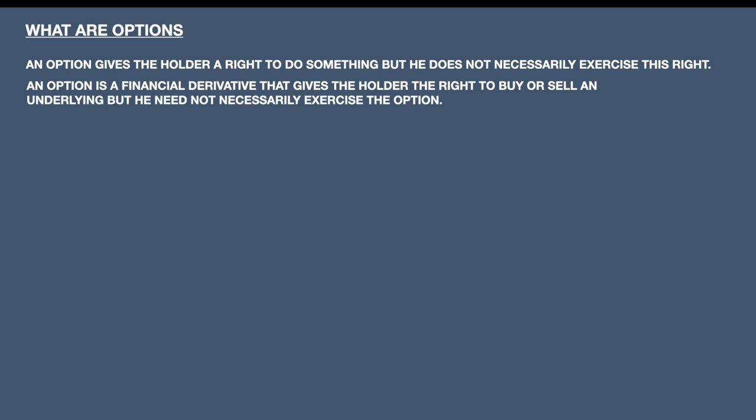An option, which is basically a financial derivative, gives the holder the right to buy or sell an underlying, but he need not necessarily exercise this option. He may have the right to buy or right to sell, but he may not buy or he may not sell. That is the meaning of exercising an option. The option buyer or seller may or may not exercise the option, but he has the authority to execute the option strategies — that is, buy or sell.